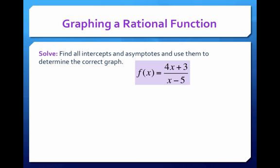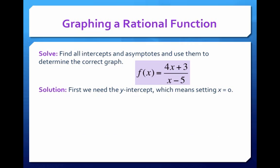So here, let's just start with an example. Find all intercepts and asymptotes and use them to determine the correct graph. In a situation like this, there are certain steps of how you want to approach it. And the first is, let's find the y-intercept.